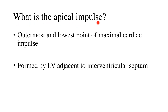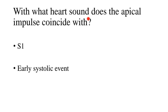What is the apical impulse? It is the outermost and lowest point of maximal cardiac impulse, formed by the left ventricle adjacent to the interventricular septum. With what heart sound does this apical impulse coincide? Since it's an early systolic event, it coincides with S1 — the closure of the atrioventricular valves, that is the mitral as well as the tricuspid valve. This apical impulse occurs so early that it is over by the first one-third of the systole.